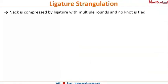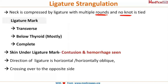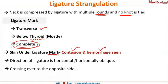In ligature strangulation, the neck is compressed by a ligature with multiple rounds around it, and no knot is formed — unlike in hanging. The ligature mark is typically transverse, mostly present below the thyroid gland, and is completely present all around the neck. The skin under the ligature mark shows contusion and hemorrhage, unlike in hanging where it shows pallor.